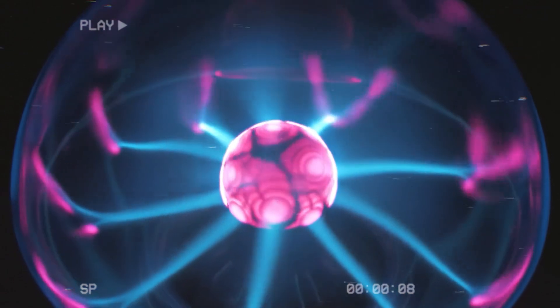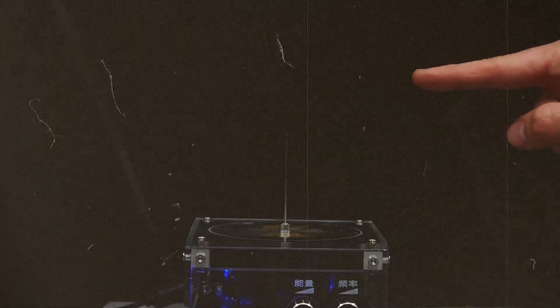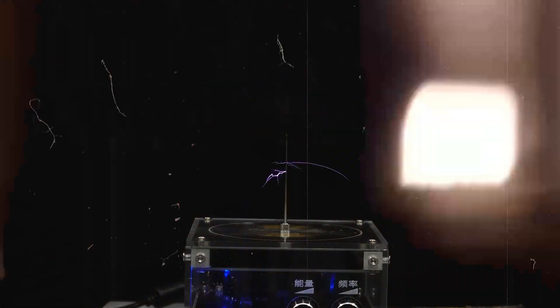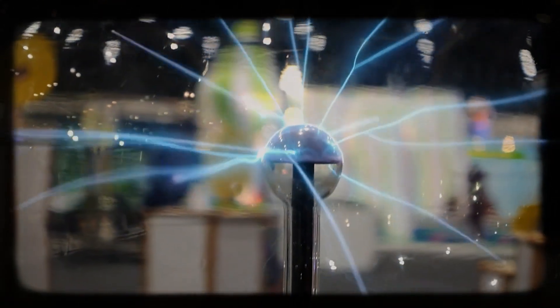When viewed in slow motion, the plasma forms layer by layer. The first few sparks warm the air, and the following ones lock onto that channel, amplifying it further. What remains is a perfectly straight, glowing line, a plasma filament guided entirely by sound.